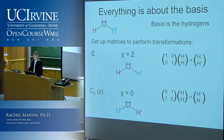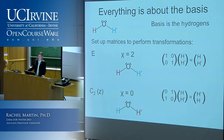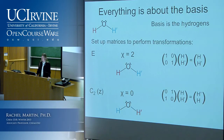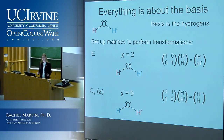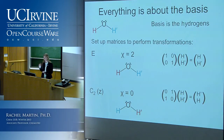Student question: Why do you change the prime? Before, blue had the prime; now red has the prime. Response: That's just because my picture is wrong — there has to be at least one every lecture. The colors are right and the vector is right, but the prime shouldn't be on the red one. That is correct.